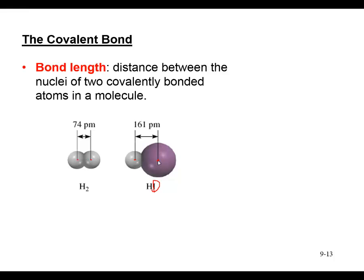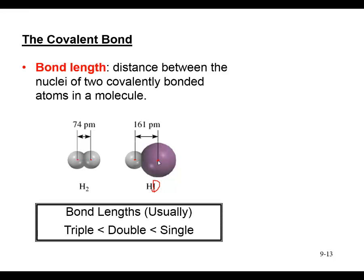As you form double or triple bonds by overlapping additional orbitals, bond length decreases. For bonds between the same types of atoms — for example, carbon–carbon bonds — a single bond is about 154 pm, a double bond is about 133 pm, and a triple bond is about 120 pm. So single bonds are longest, double bonds intermediate, and triple bonds shortest.